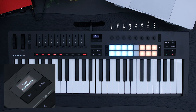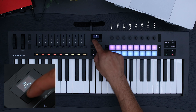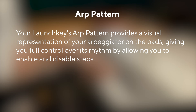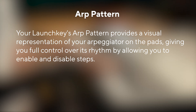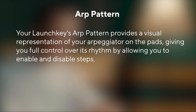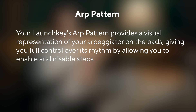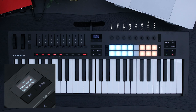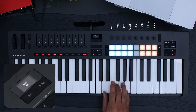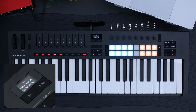To turn your latched notes off, hold Shift and then ARP. Your Launch Key's arp pattern provides a visual representation of your arpeggiator on the pads, giving you full control over its rhythm by allowing you to enable and disable steps. Let's turn latch back on by holding Shift and ARP and play some notes. Now to activate arp pattern, press Shift and ARP Pattern.